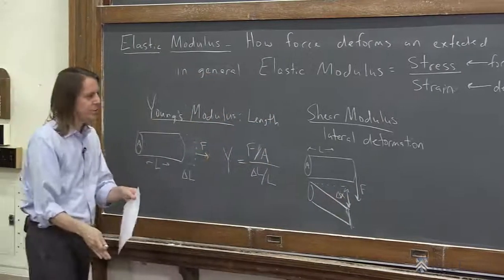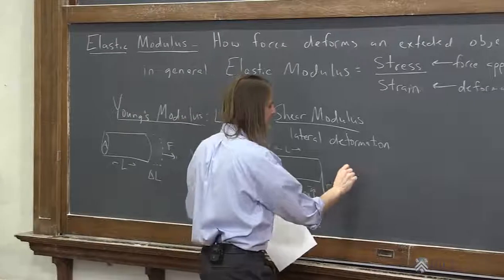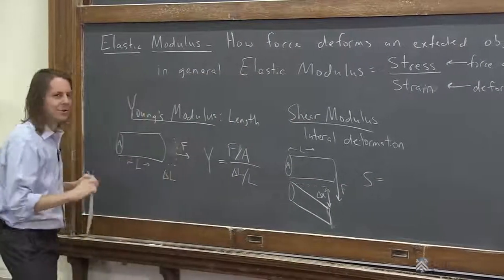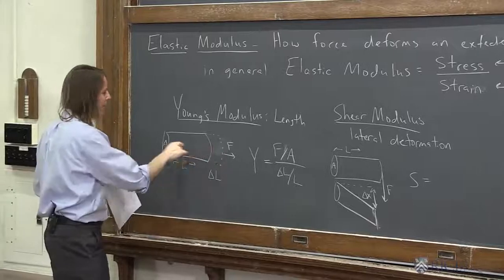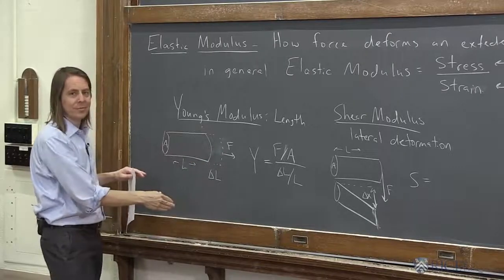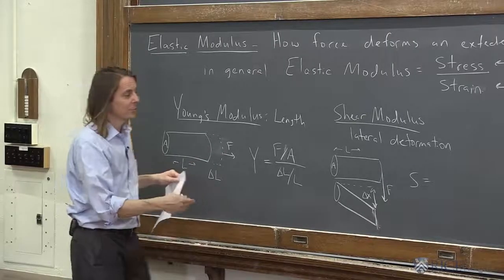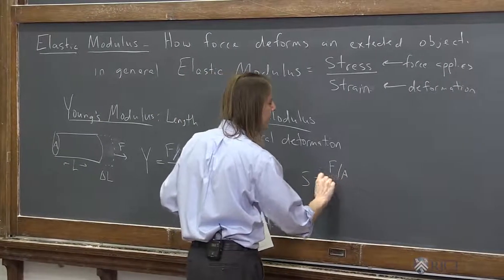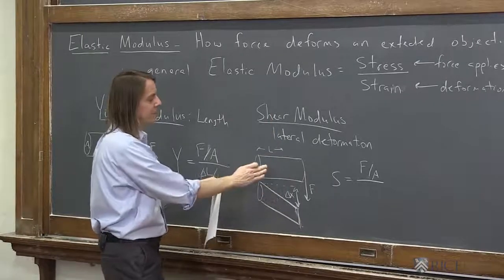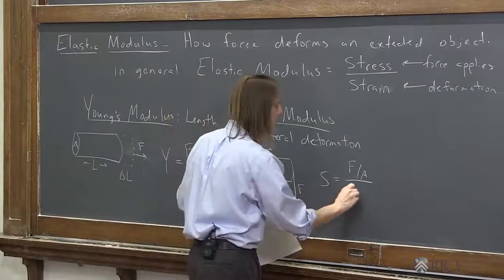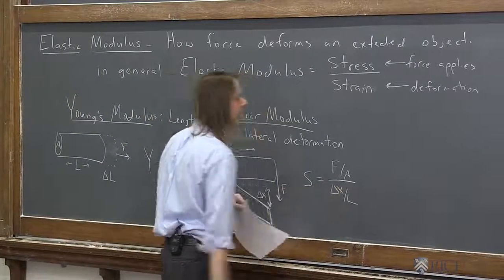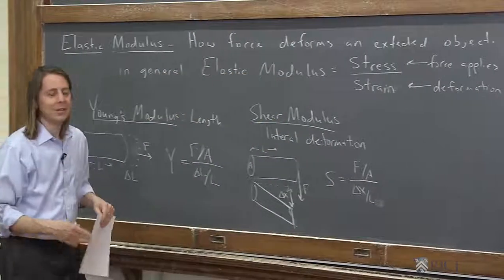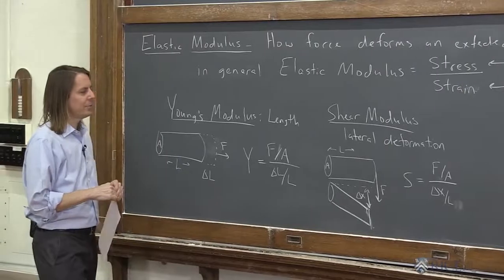How far down did you shear it? That modulus, we'll call it S usually. And it's the same pressure that you would apply. Same force per unit area, it's just in a different direction. So now you can see it's not really a pressure. Force per unit area. So the same force over the cross-sectional area. And then, again, it's a fractional deformation. It's delta x over L. Also a unit of pressure, but you can see it is not a pressure. It is a modulus. It describes how much something deforms.